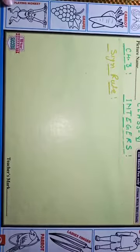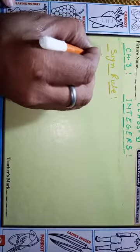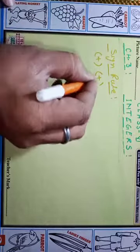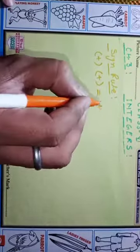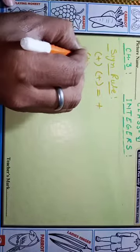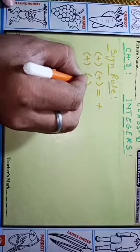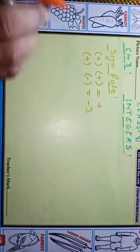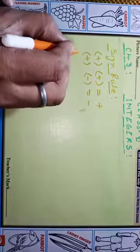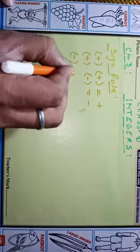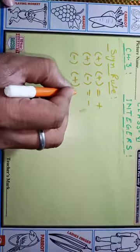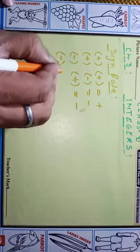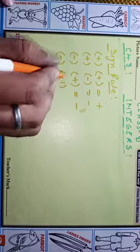Now see the sign rule — very important. If both signs are plus and plus, that becomes plus. If first is plus and second is minus, then plus minus becomes minus. If first is minus and second is plus, that becomes minus.